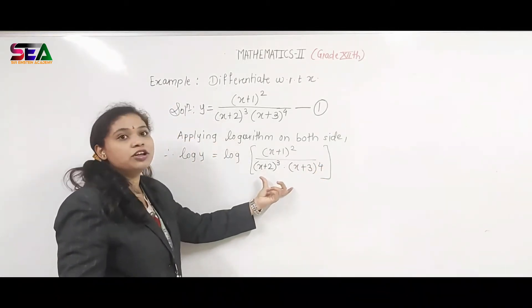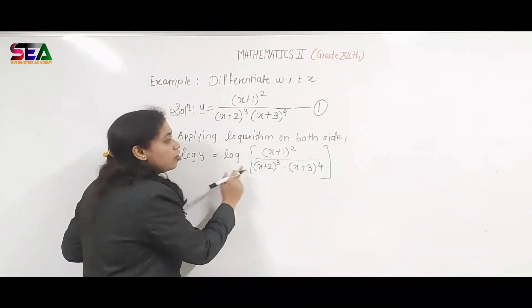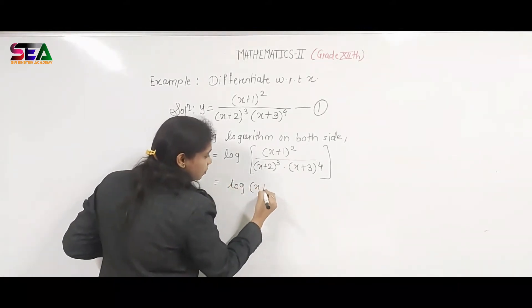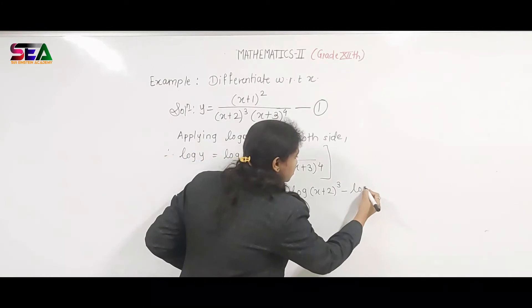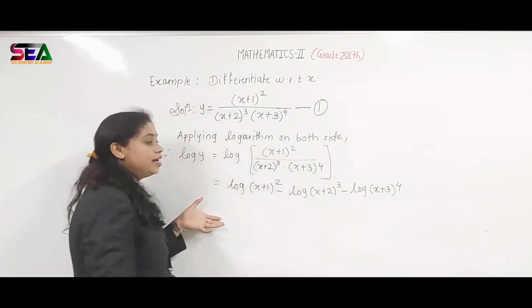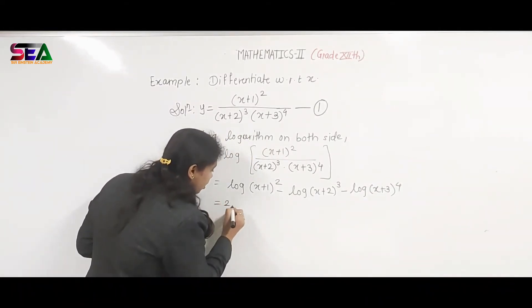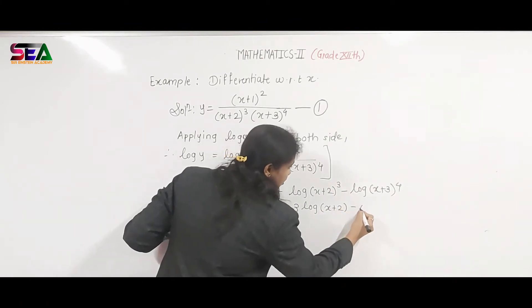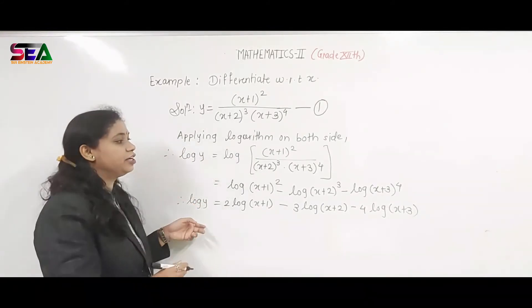Observing that this is a division of 3 functions, we apply the logarithm rules. Rule 2 gives us: log of numerator minus log of denominator terms. So it becomes log(x+1)² minus log(x+2)³ minus log(x+3)⁴. The function is not yet fully simplified — we observe powers 2, 3, and 4 — so we use the exponent rule (rule 3), giving: 2·log(x+1) minus 3·log(x+2) minus 4·log(x+3). Now we can take step 3 and differentiate.